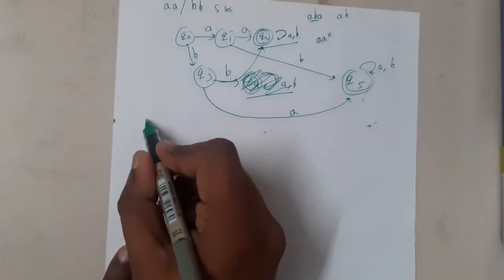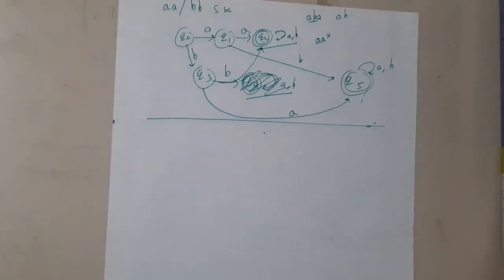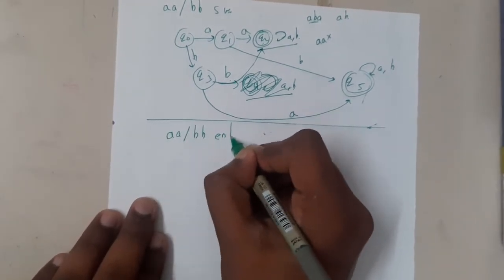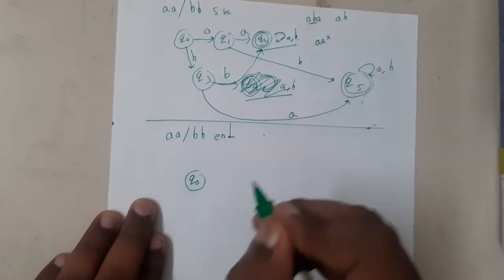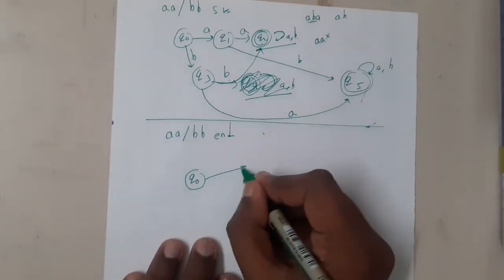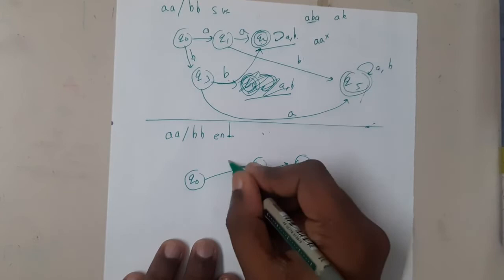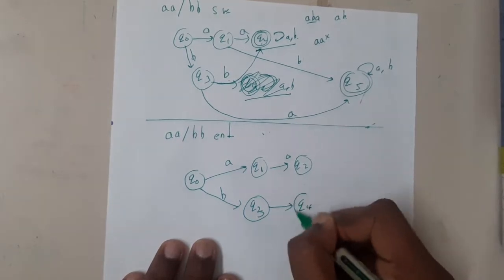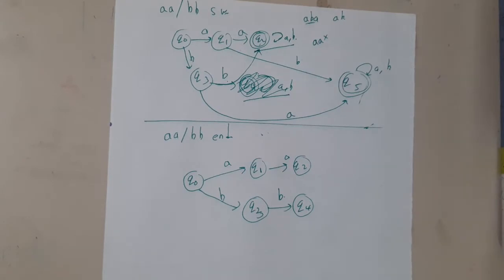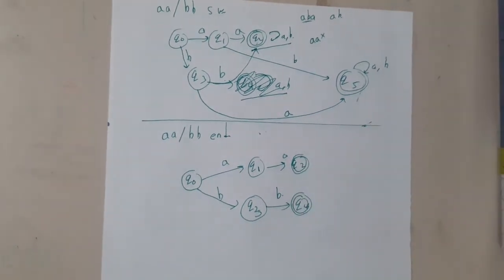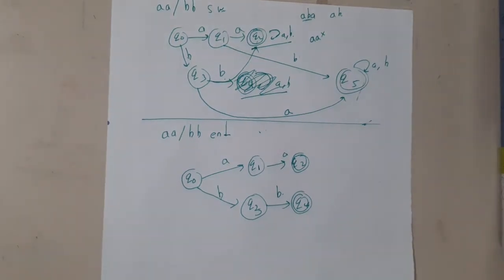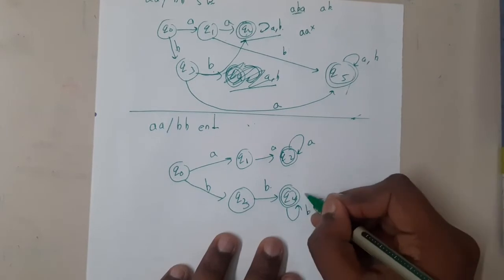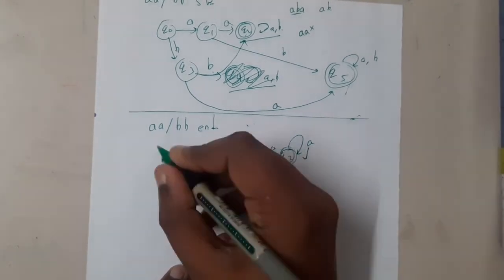A few students might think we already discussed these in the last lecture, but here we are combining both patterns in a single diagram — that's the major difference. Ending with 'aa' or 'bb': from q0, the smallest strings are 'aa' and 'bb'. Drawing them: q1, q2 for 'aa' path and q3, q4 for 'bb' path — these two are final states. For triple 'a' you continue here; for triple 'b' you continue there.